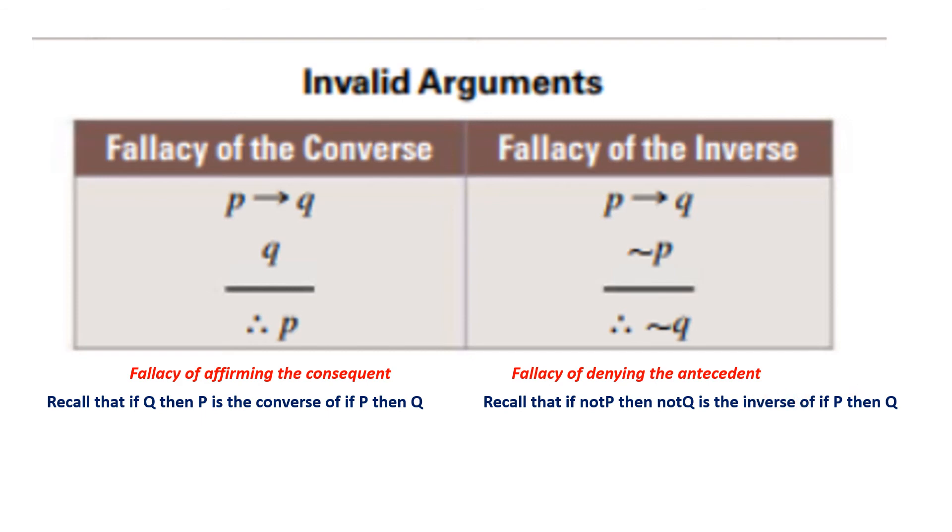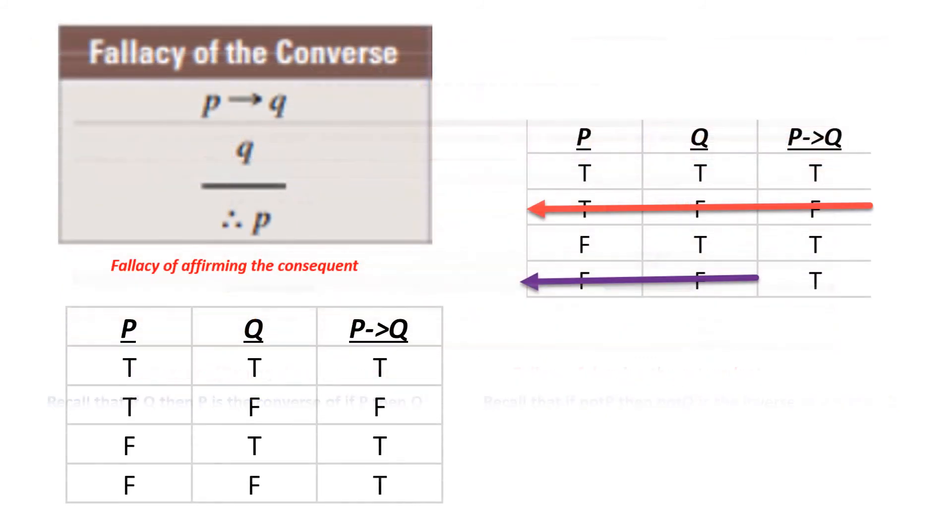Let's look at the proofs of these. And we're showing that they're not valid arguments. So let's look at the fallacy of the converse, which is here. So I build a truth table with my component parts, and then everything above the line I force to be true. So I cross out this one and I cross out this one. And you see that that does not force P to be true. So that is a fallacy.